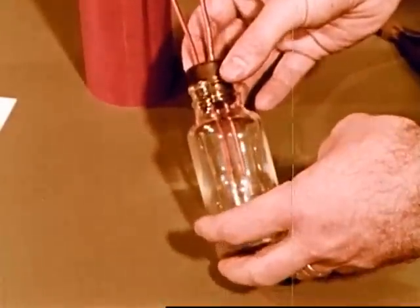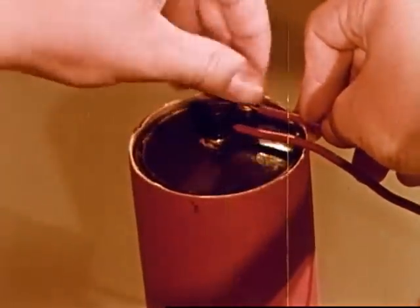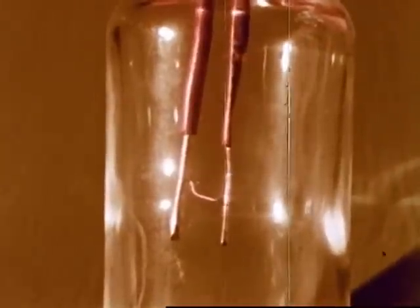He then slips the wires and stopper into a bottle. It's a homemade light bulb. As soon as the battery is connected to make a complete path for the electricity, the wire begins to glow.